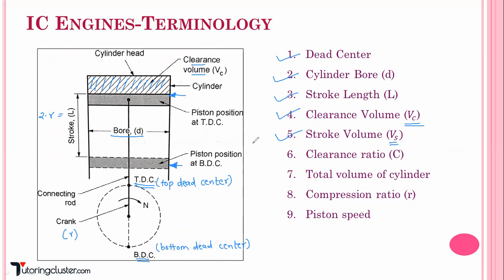The next terminology is clearance ratio, denoted by capital C. The ratio of clearance volume to stroke volume is called the clearance ratio. The stroke volume can be calculated as Vs = (π/4) × d² × l, where d is the cylinder bore and l is the stroke length.